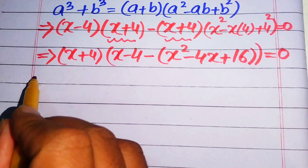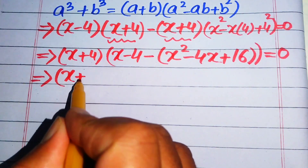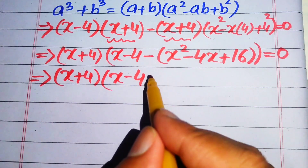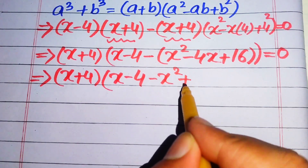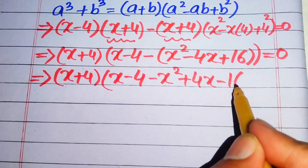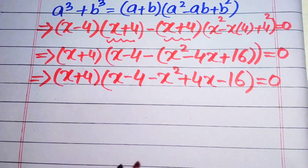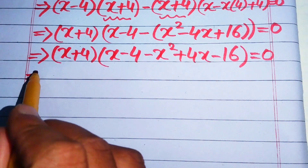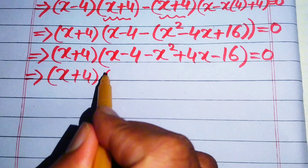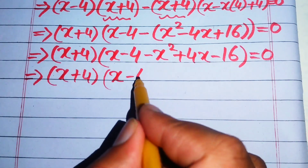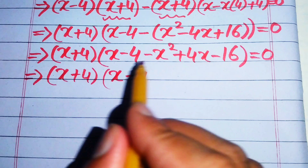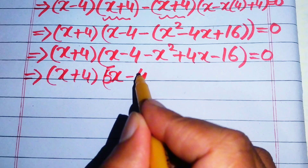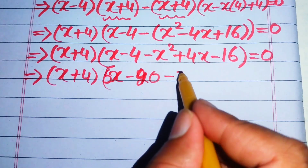We further simplify. We have x plus 4 times x minus 4, and we multiply the negative sign through all terms of the cubic expression, giving minus x squared plus 4x minus 16. Combining like terms inside the bracket: x minus 4 plus 4x gives 5x, and minus 4 minus 16 gives minus 20. So we have minus x squared plus 5x minus 20.